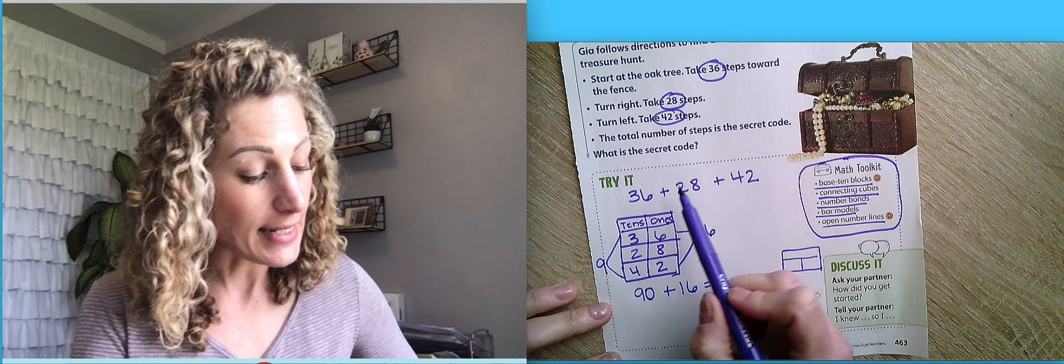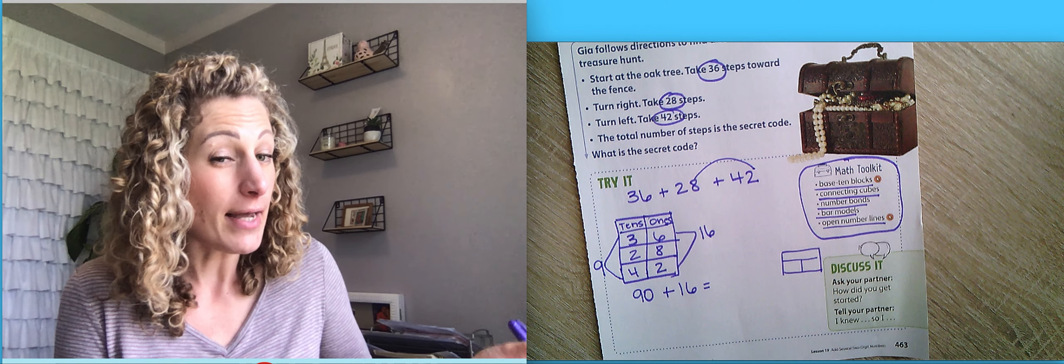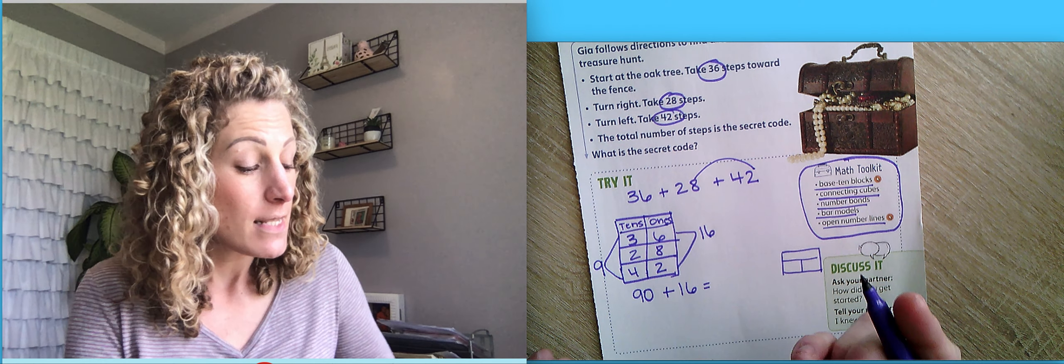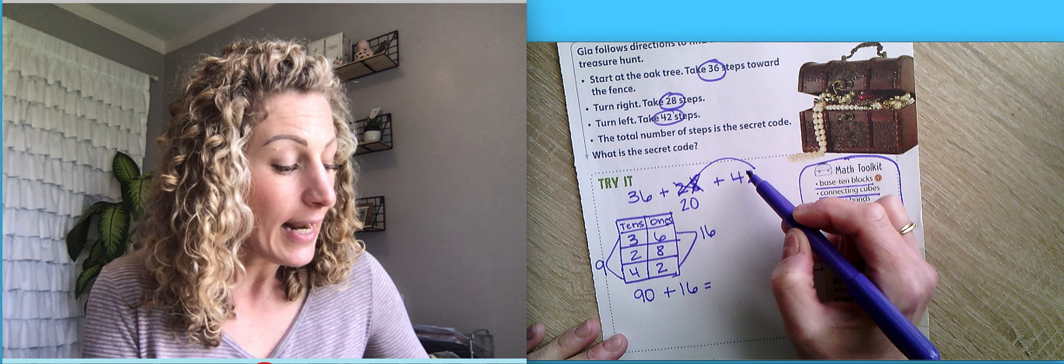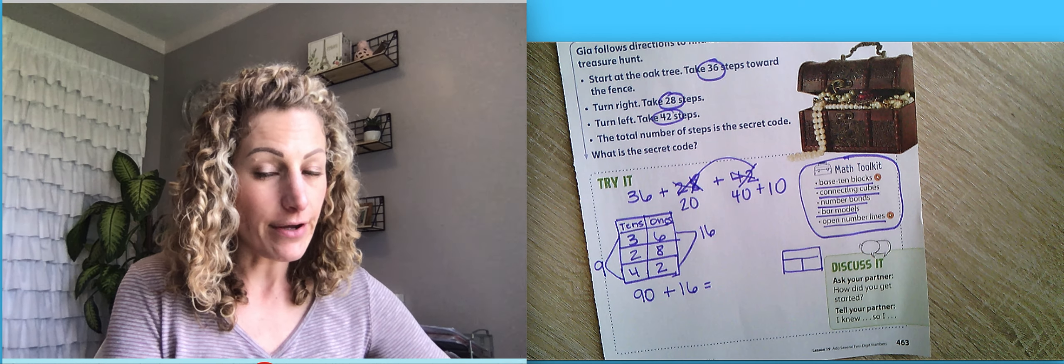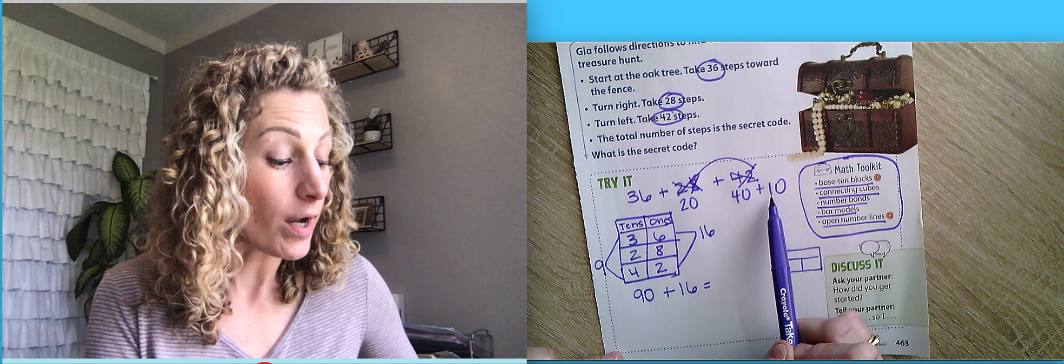Another way you can do it is if you know 8 and 2 make 10, that cancels them out, right? So we could make this number 20 and this number 40 and add another 10. Then we have 30, 40, 50, 60, 70, 80, 90, 100.